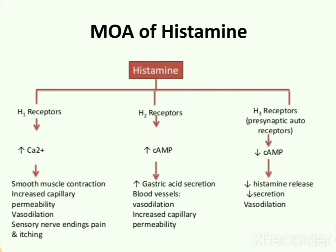Histamine acts by different modes of action on different receptors. Activation of H1 receptor by histamine causes increase in phospholipase A2 and D activity. It also increases the intracellular calcium 2+ ions and increase in diacylglycerol. Increasing the concentration of phospholipase A2, diacylglycerol, and intracellular calcium 2+ causes smooth muscle contraction.